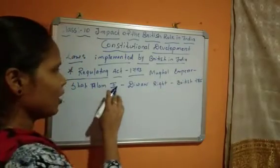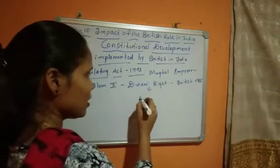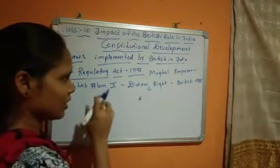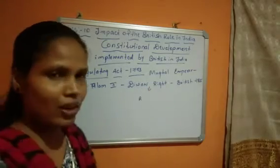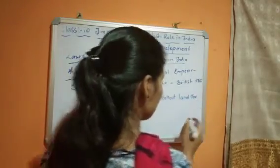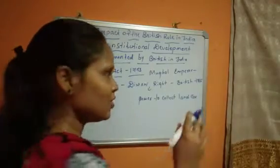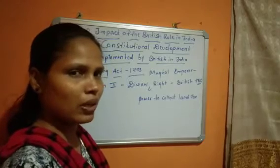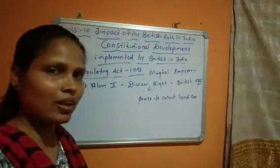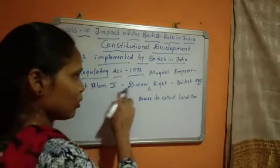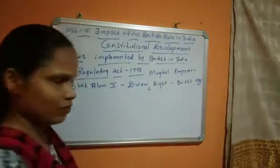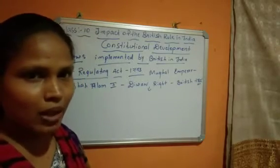Mughal Emperor Shah Alam II gave Diwani Rights — that is, the authority to collect land tax — to the British. He gave this power to the British in 1765. Why did he give this power? Because in the Battle of Buxar he was defeated by the British. So he surrendered and gave the Diwani Rights — the authority to collect land tax from the people — to the British in 1765.